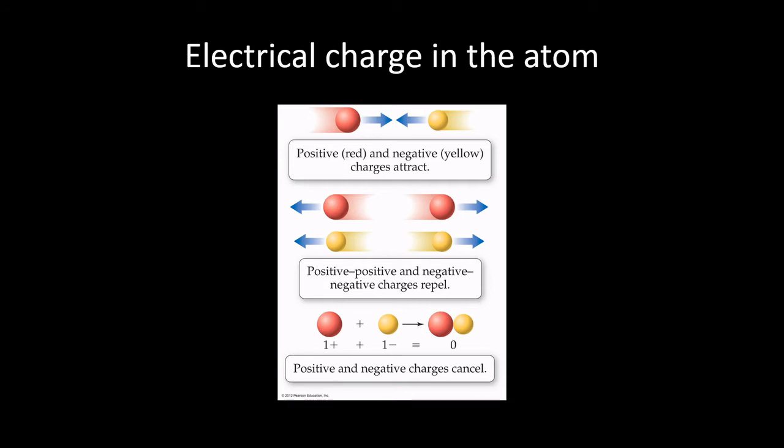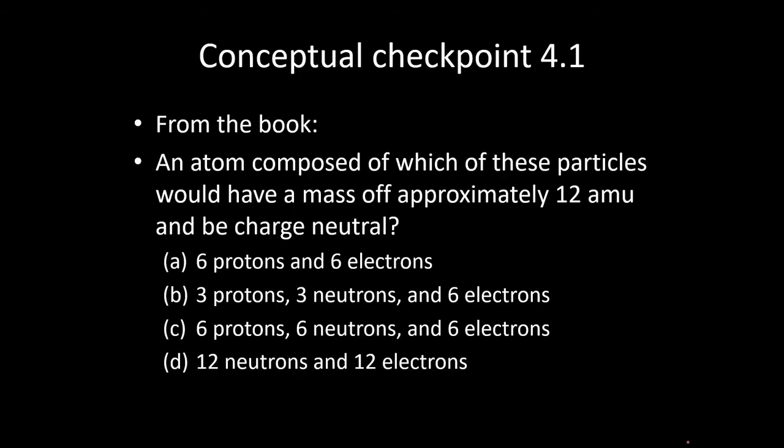So just a few other things here that you probably have discussed before in other classes. But when it comes to things that are charged, hopefully you remember that dissimilar charges, so opposite charges, attract each other. So protons and electrons like each other. They are attracted to each other. But like charges repel. So similar charges repel. Two protons don't really like being next to each other. And two electrons don't really like being next to each other. And then the last thing here on this slide is the protons and electrons cancel each other out in terms of the charge. So if you have four protons and four electrons in an atom, your atom is neutrally charged.